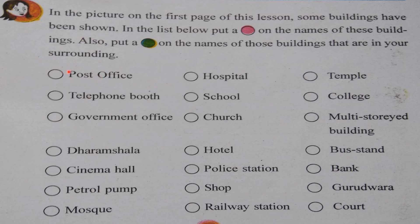For your surroundings — your house, a temple, or a college nearby, a multi-story building, or a bus stand in front of your house — you have to tick mark those. This activity is to be done completely by you. I have not written any answer or tick mark here.